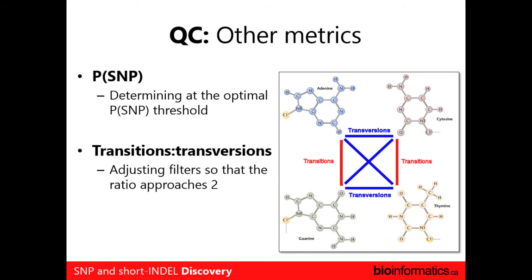There are other metrics. People might find a good cutoff for the variant quality score. Some people pay close attention to the transition-to-transversion ratio. A lot of projects monitor that the Ti/Tv ratio in humans is really close to 2. If you have something divergent from that, it might be an indication that you have problems in your variant calling.